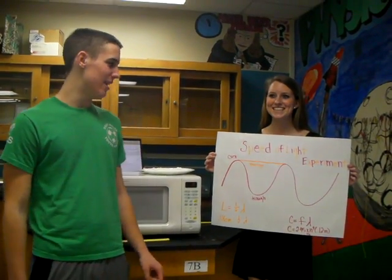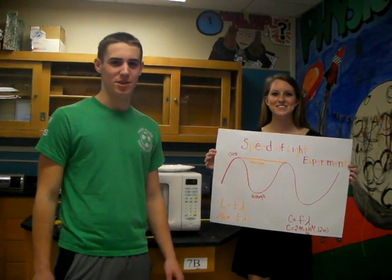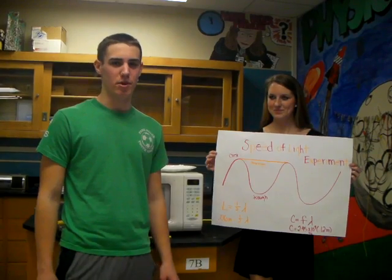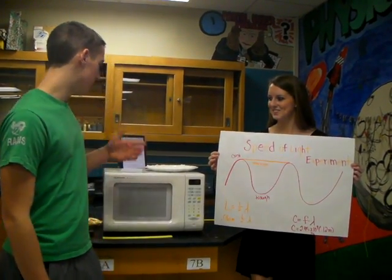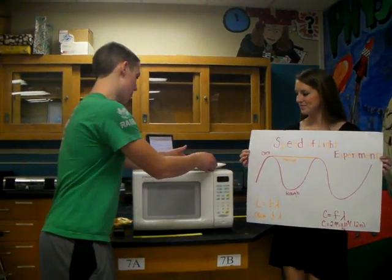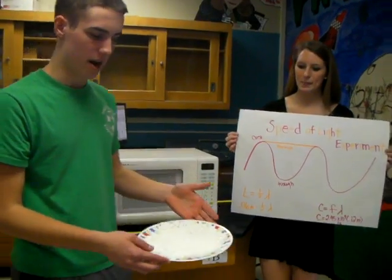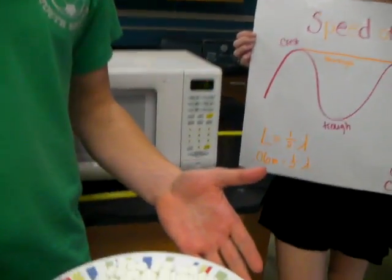We conducted a speed of light experiment using a microwave and a bunch of mini marshmallows. The mini marshmallows are put on a plate, equally spread out, so that it covers the entire plate.